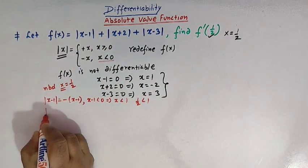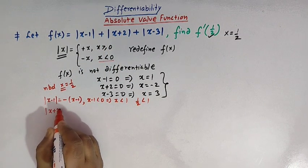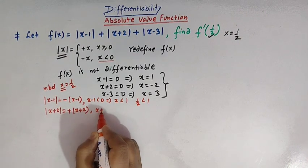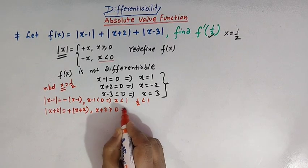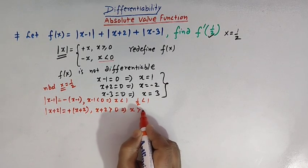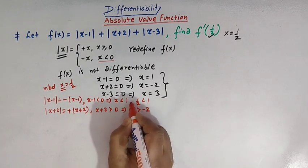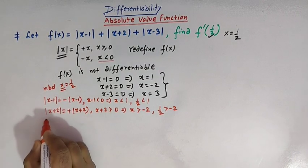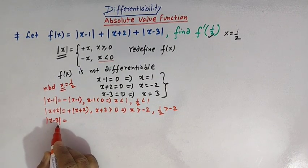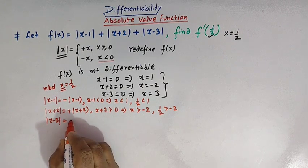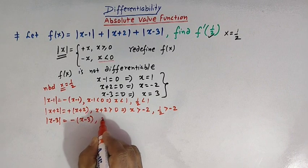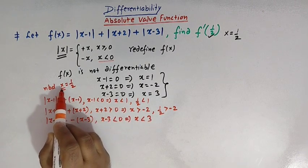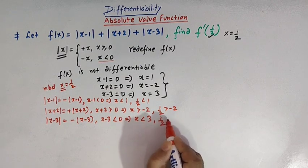For the second term, mod of x plus two takes the value positive of x plus two whenever x plus two is greater than zero, implying x must be greater than minus two. Since x equals one half and one half is greater than minus two, this applies. For the third term, mod of x minus three equals negative of x minus three whenever x minus three is less than zero, or x is less than three. Since one half is less than three, this also applies.